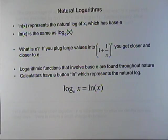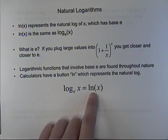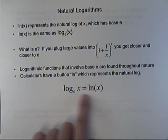It's about 2.7. It's just a number. We talked about that before, what e is. Alright, so you have a button on your calculator you can use, but just remember that this and this are the same thing.